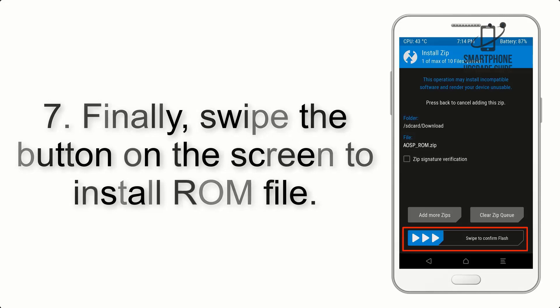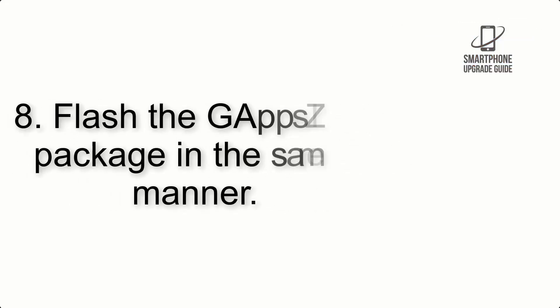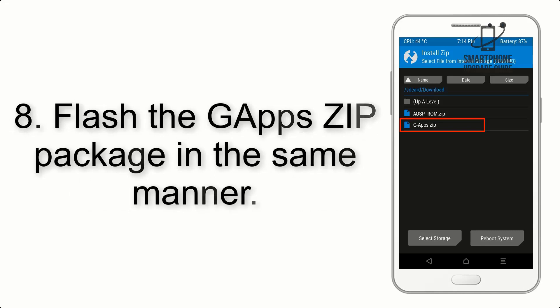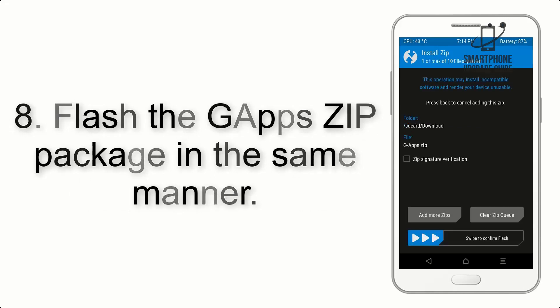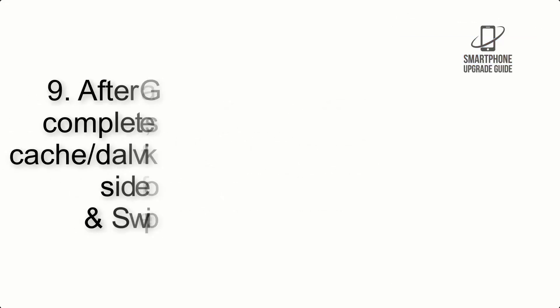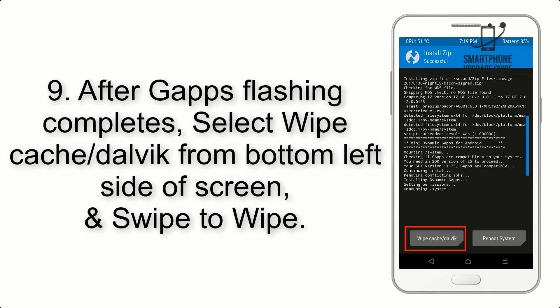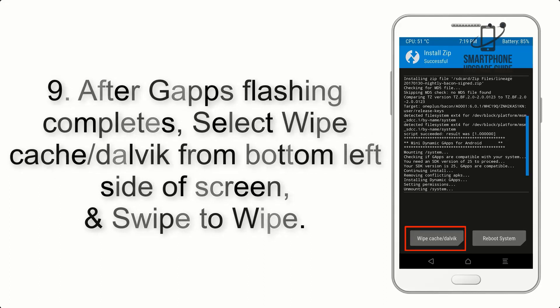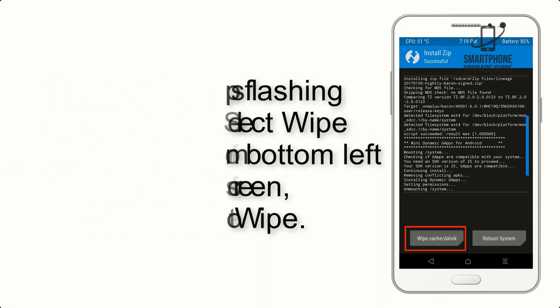Step 7: Swipe the button on the screen to install the ROM file. Step 8: Flash the GApps zip package in the same manner. Step 9: After GApps flashing completes, select Wipe Cache and Dalvik from the bottom left side of the screen and swipe to wipe.